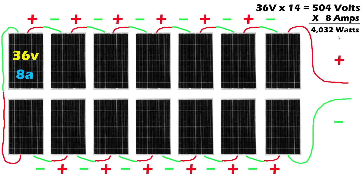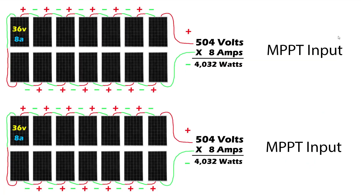When I'm done I'll have two strings of 14 panels each. The positive and negatives left over connect into the MPPT inputs. My inverter has two separate inputs and it's very important to know the voltage ranges on each. In my case they are both up to 550 volts, so we won't end up with 1,008 volts — we'll end up with 504 volts per MPPT input.